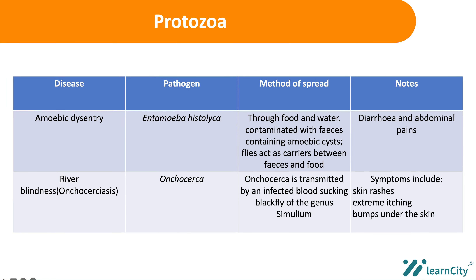Now let's talk about some other protozoan diseases. One is amoebic dysentery, caused by a pathogen called Entamoeba histolytica. It can spread through contaminated food and water — food or water contaminated by the faeces of an infected person — and can also be spread by carriers of the disease. Symptoms include diarrhea and abdominal pains.